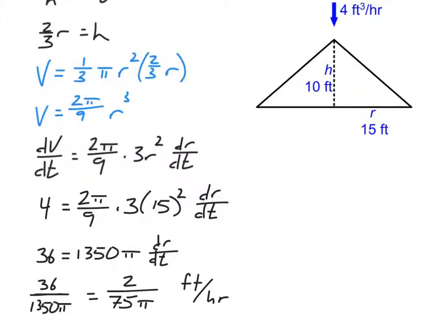The key takeaway: when looking for dh/dt, eliminate r from the equation; when looking for dr/dt, eliminate h. Just pay attention to which variable you're solving for in each particular case.